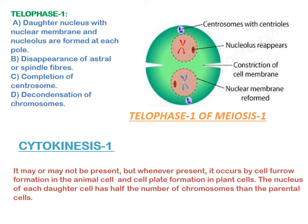Telophase 1 may or may not occur. When it occurs, changes are opposite to those of prophase 1. At each pole, a daughter nucleus with nuclear membrane from endoplasmic reticulum and nucleolus from the NOR of satellite chromosome is formed. There is disappearance of astral rays and spindle fibers, completion of cytokinesis, and the chromosomes undergo decondensation by hydration and despiralization, changing into long thread-like chromatin material.